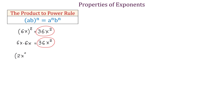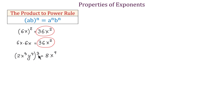Another example: (2 x cubed y to the fourth power) all raised to the third power. Inside the parenthesis we have a product of 2, x cubed, and y to the fourth power. Each of these factors has to be raised to the third power. 2 cubed equals 8. When we raise x cubed to the third power, according to the power rule, we need to multiply the exponents, so 3 times 3 is 9 and we will have x to the ninth power. And y to the fourth power raised to the third power will be y to the twelfth power.